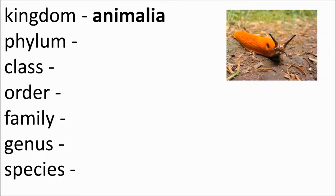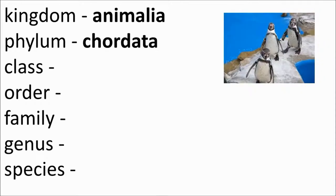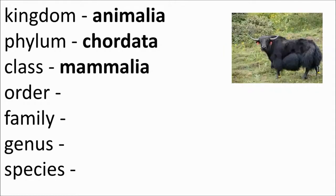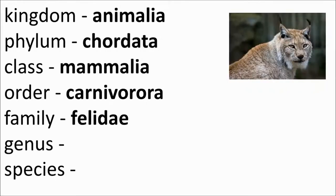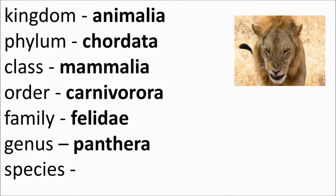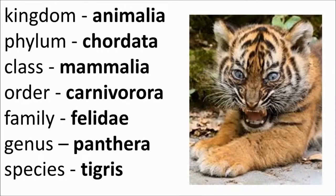The phylum is chordata, which means it's a vertebrate — it has a backbone. The class is mammalia, so it's a mammal with hair or fur that gives birth to live young. It's a carnivore, so it eats meat. It belongs to the cat family. The genus is panthera, and the species is tigris. That's how we narrow it down over and over again to get to a tiger. There are further divisions within the tiger as well — whether it's a Bengal tiger or whatever kind it might be.